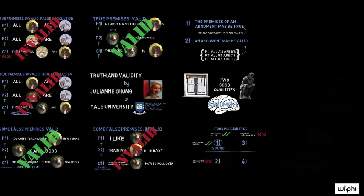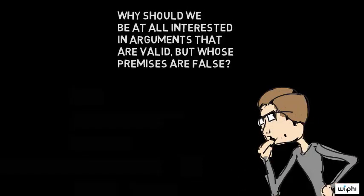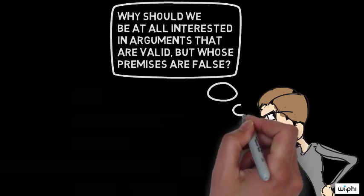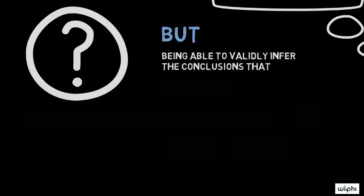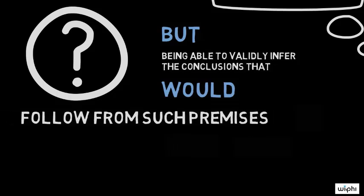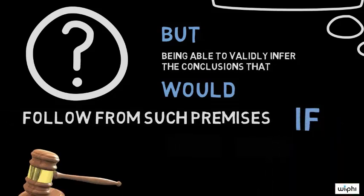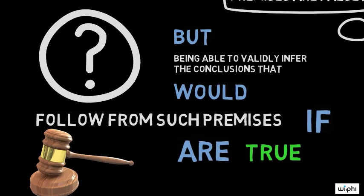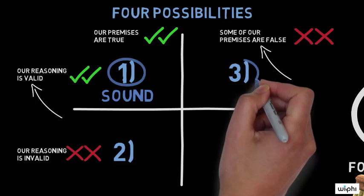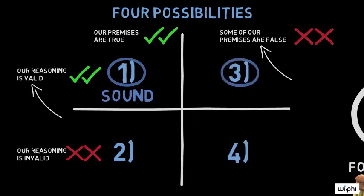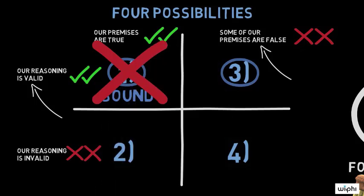Philosophers call such arguments sound arguments. Because of this, you might be wondering why we should be at all interested in arguments that are valid but whose premises are false. One answer is that we are often not in a position to know whether our premises are true. But being able to validly infer the conclusions that would follow from such premises, if they were true, sometimes enables us to judge whether they are true. This is because validly inferring a conclusion that we know to be false from a given set of premises will tell us that one of our premises must be false too. After all, a false conclusion cannot validly be deduced from true premises.